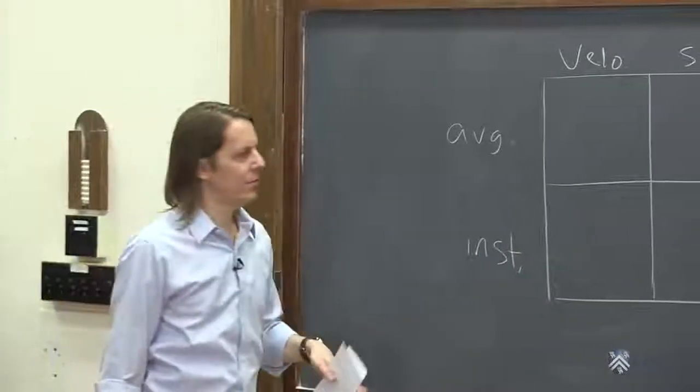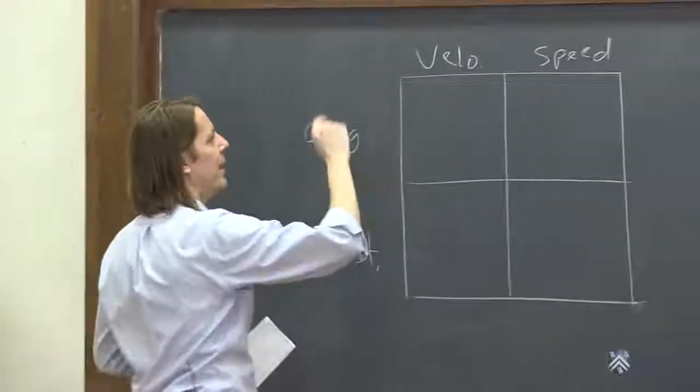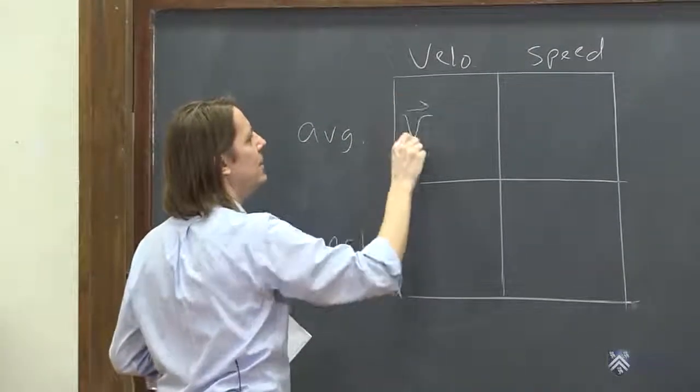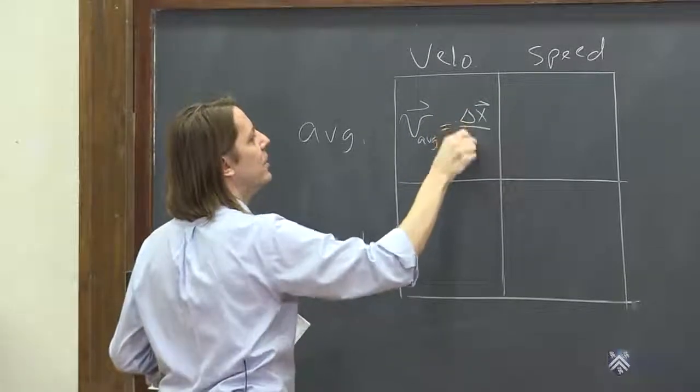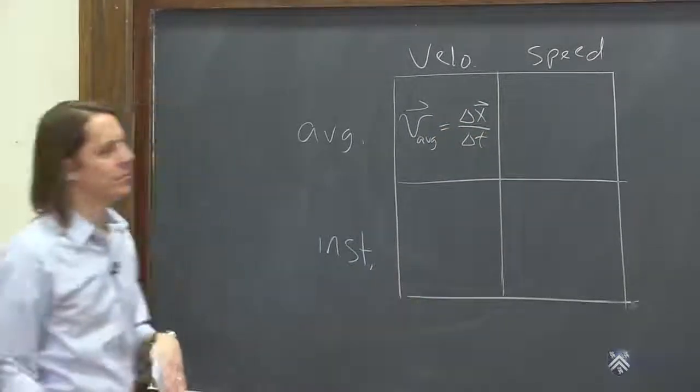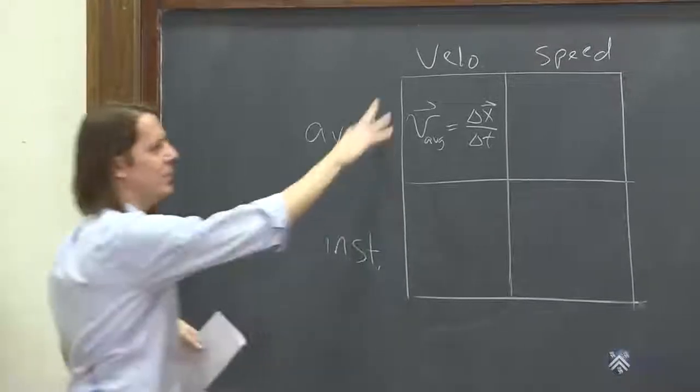So first, let's just remind ourselves what they are. The average velocity, that's what we called v avg. And it was the displacement over some time interval. We got that done.